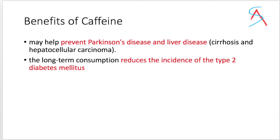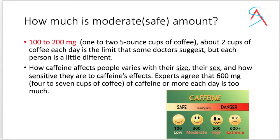Caffeine does have some benefits as well — it can help prevent Parkinson's disease, liver disease, and can reduce the incidence of type 2 diabetes. Therefore caffeine should be taken in moderate amounts. The safe or moderate amount is said to be 100 to 200 mg, depending on the person's size, sex, and how sensitive their body is to caffeine.